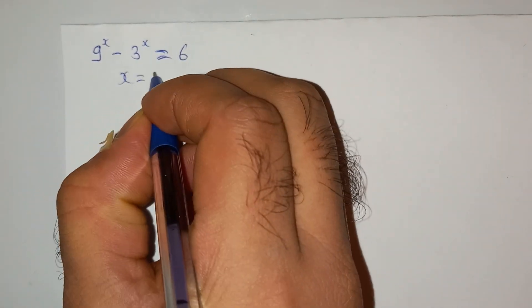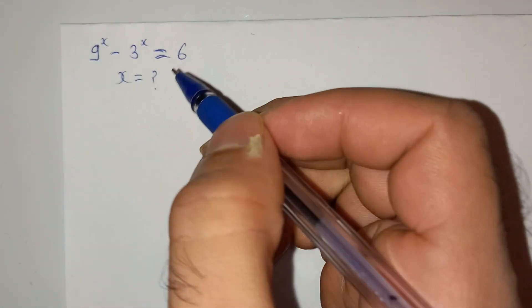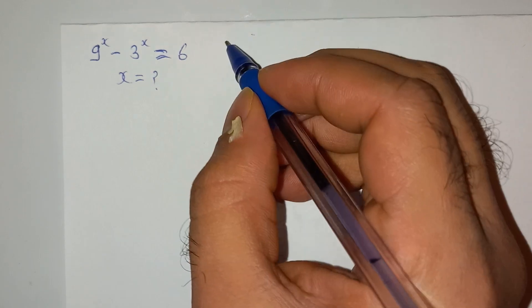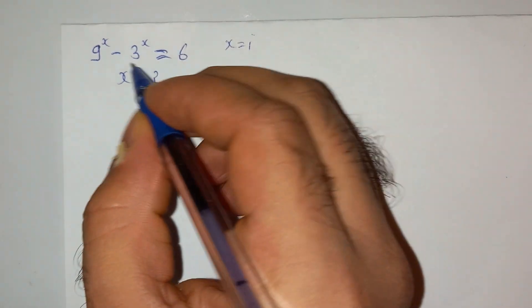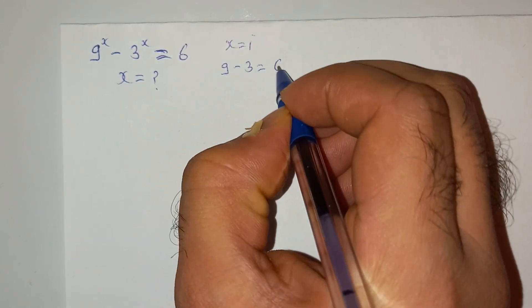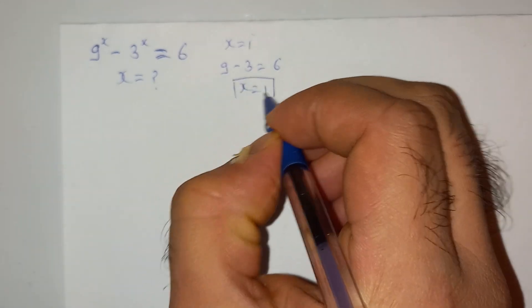So what is the value of x? One of the fastest ways to solve this question is to put the value of x as, let's say by hit and trial method, as 1. And we can see that it will be 9 minus 3 equals to 6. So we know that the answer is 1, but what if we want to try by following the proper method? Let's do that.